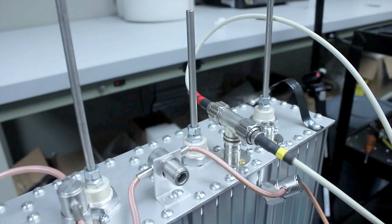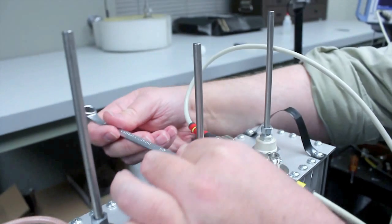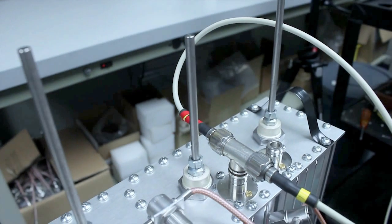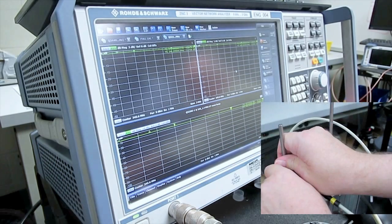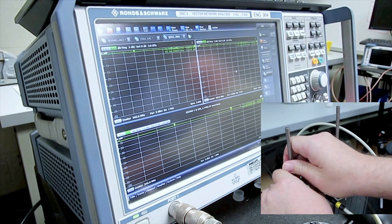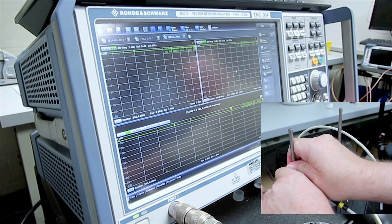Again, loosening the nut on the top, adjusting the frequency. And of course, to raise the frequency of the cavity, you pull the tuning rod out. To lower it, you push it in.